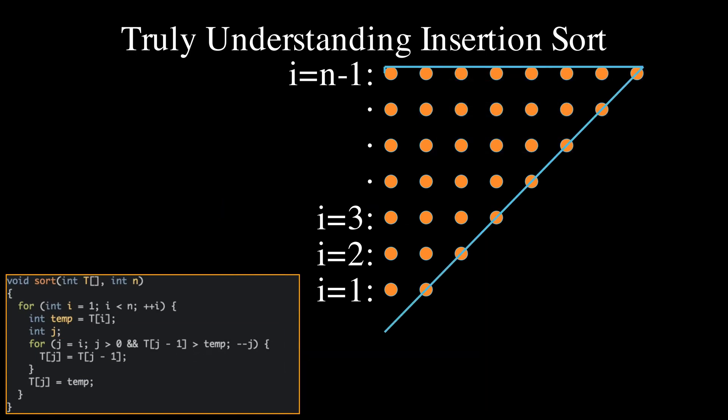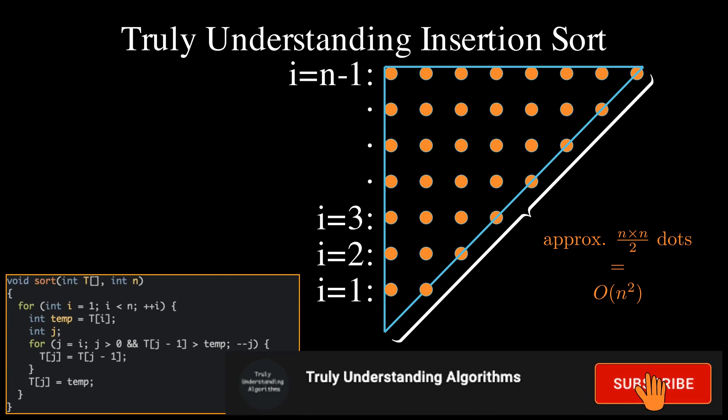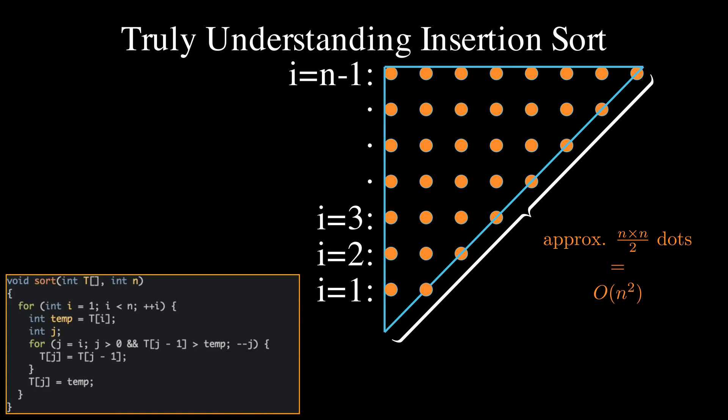The dots cover the entire upper right half of the n by n matrix, give or take one dot. This amounts to approximately n times n divided by two dots for the worst case scenario. As each dot represents one time unit, this makes the running time of the algorithm big O of n squared. Subscribe to the Truly Understanding Algorithms YouTube channel to stay up to date with our videos on interesting algorithms and data structures. Visit trulyunderstandingalgorithms.com to read a textual version of these tutorials.